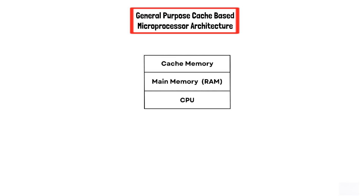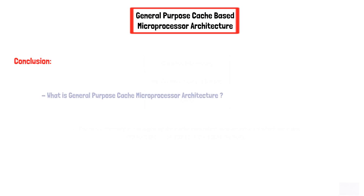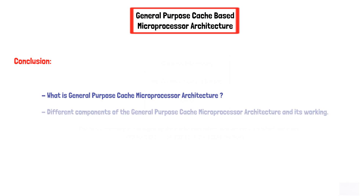Moreover, the cache memory is managed by the cache controller, who determines which data and instructions are to be stored in the cache memory. In conclusion, we have covered what is general purpose cache-based microprocessor architecture and studied its different components and working.